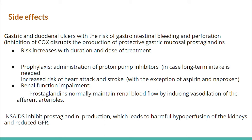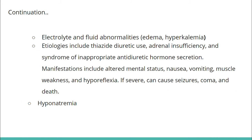NSAIDs cause renal function impairment, as prostaglandins normally maintain renal blood flow by inducing vasodilation of the afferent arteriole. NSAIDs inhibit prostaglandin production, leading to harmful hypoperfusion of the kidneys and reduced GFR. Additionally, electrolyte and fluid abnormalities such as edema and hyperkalemia may occur. Etiologies include thiazide diuretic use, adrenal insufficiency, and syndrome of inappropriate antidiuretic hormone secretion. Manifestations include altered mental status, nausea, vomiting, muscle weakness, and hyporeflexia. If severe, it can cause seizures, coma, death, and hyponatremia.